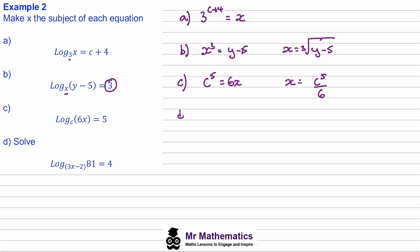Then for question d, we've got 3x minus 2 with our base, we're raising this to the power of 4, and this equals 81. And we should know that 3 to the power of 4 is equal to 81, so this means 3x minus 2 will equal 3. We can solve this equation: 3x will equal 5, x will equal 5/3.